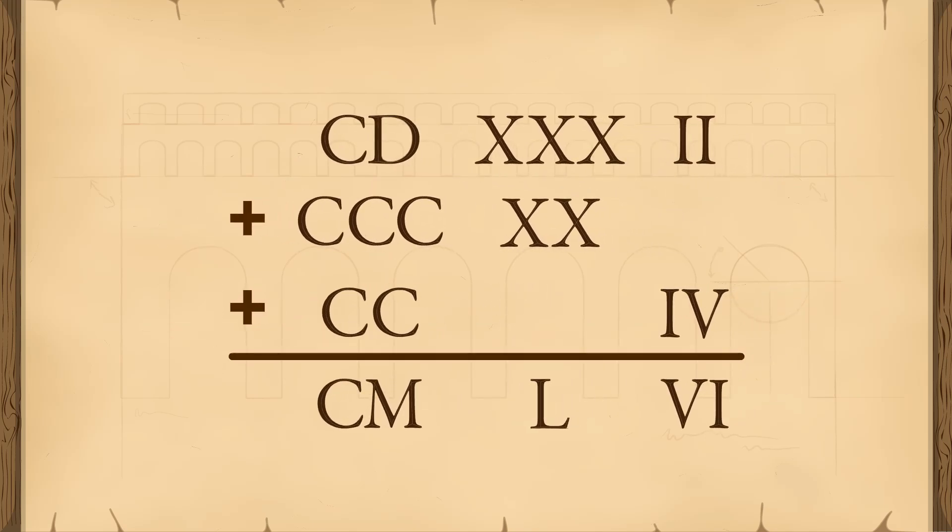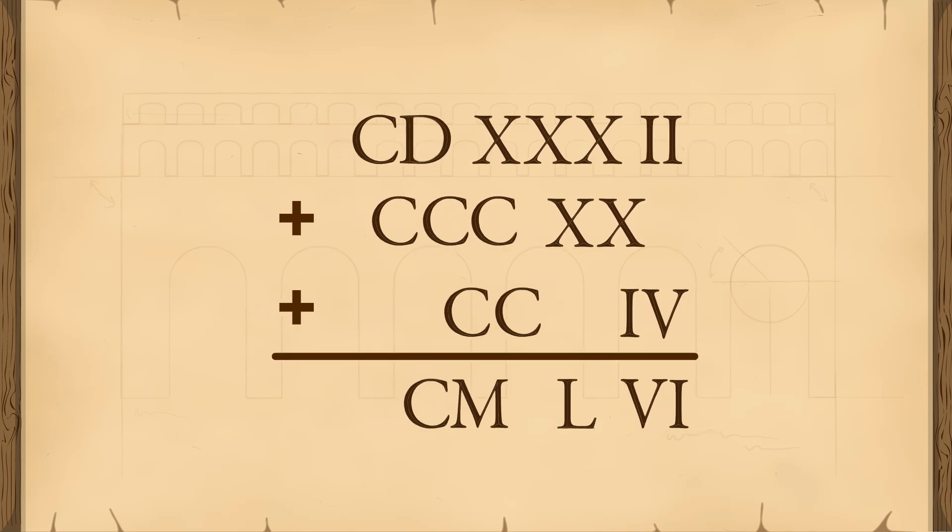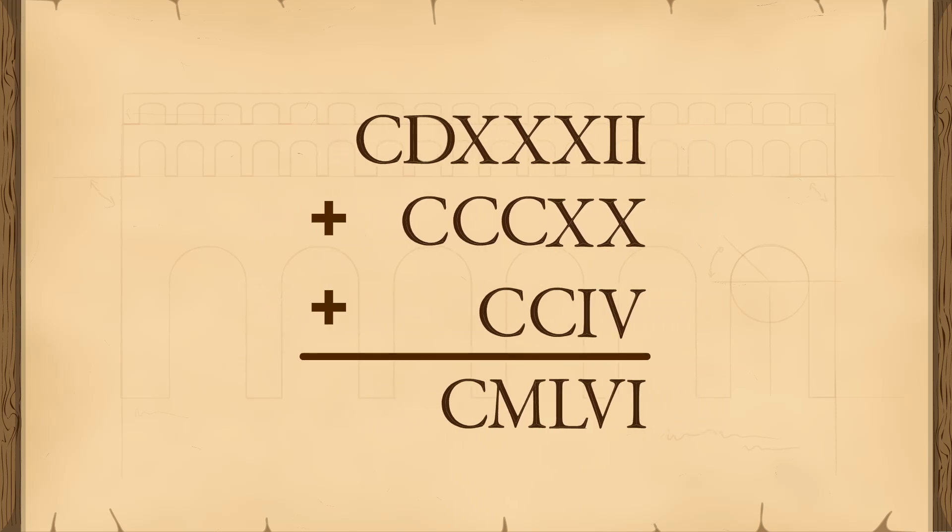The important difference between the Roman number system and our modern system is that in the Roman system the position of a symbol within a number doesn't determine the value. Since symbols do not have to fall into particular columns, zeros are not needed as a column placeholder.